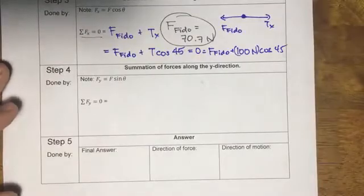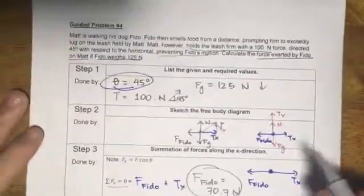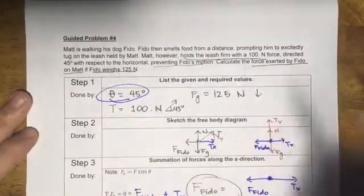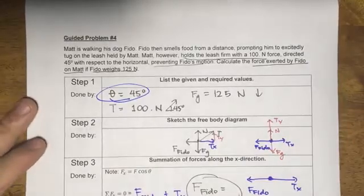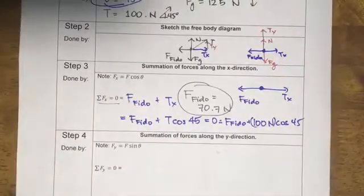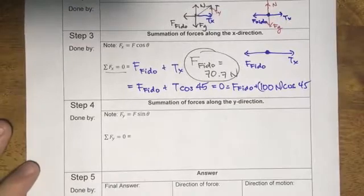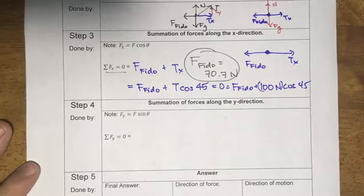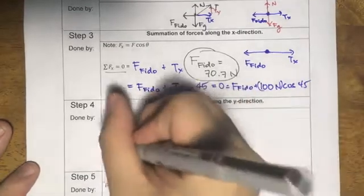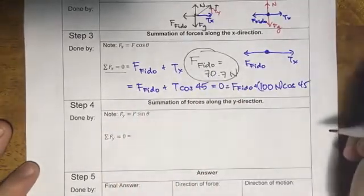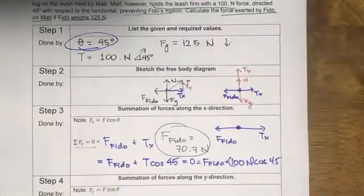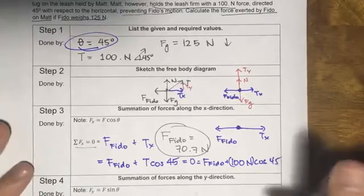But we also have to balance the forces in the y. Now actually, you've already solved the problem because you're only being asked to solve for the force exerted by Fido on Matt, but we will also solve in the y direction because the problem set requires you to do it that way. So how do we solve in the y? It's in equilibrium because you're not moving. In the y, what forces are acting?